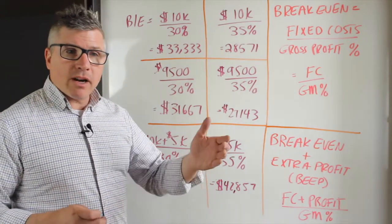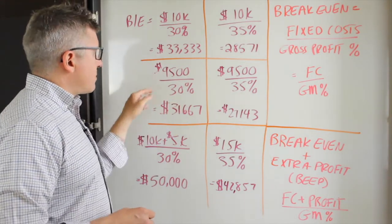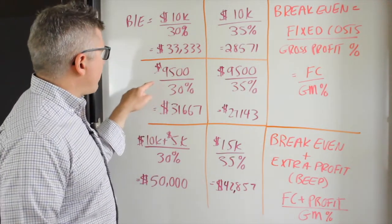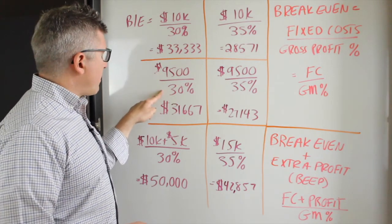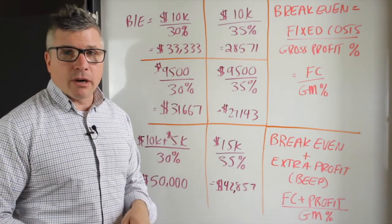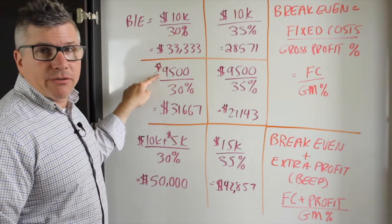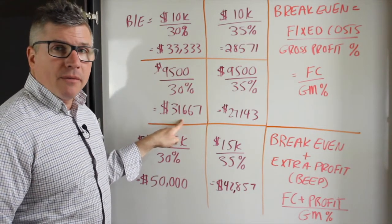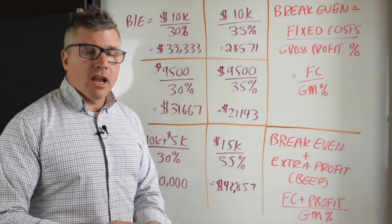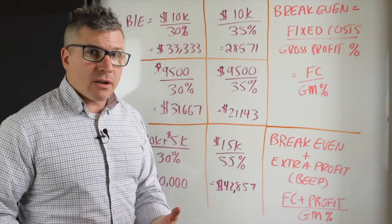So let's look at what happens when we find a way to reduce our fixed costs. We're going to go back to our 30% that we started with. Let's say instead of $10,000 per month, you've gone through your expenses and you found a few savings here and there totaling $500. So now your fixed costs are $9,500. Your gross profit margin is 30%. That means you only have to sell $31,667 in order to break even. With $10,000 fixed cost, you have to sell $33,000 and change. With $9,500 fixed cost, you only have to sell $31,000 and change. If you can find some ways to save on your fixed costs, you don't have to sell as much to break even. When you run your own numbers, you'll be able to see exactly how much less you need to do in sales to hit your break-even.